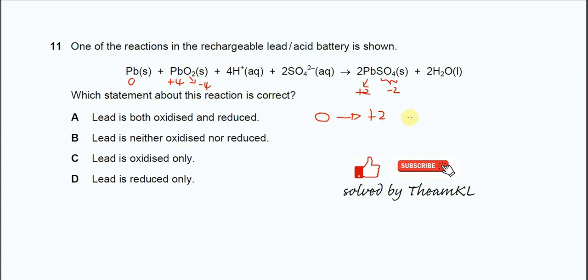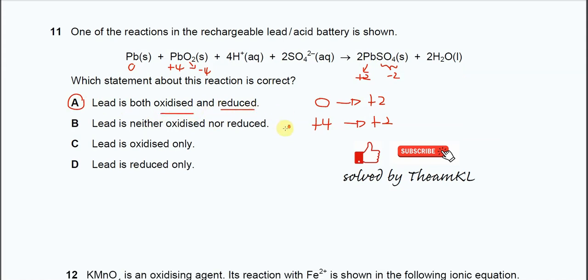So which is oxidation. And from positive 4 to positive 2. Oxidation number decreases. So it's a reduction. So means the lead is undergo oxidation and the reduction. Okay, so answer is A. So lead is both oxidized and reduced. Okay, next.